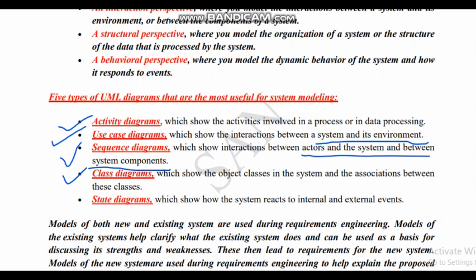Then we have class diagrams. Being a computer student, you should know what is a class. Class diagrams are used to show the object classes in the system and the association between these classes. Whatever components are there in your software are organized in terms of classes, and we try to show the relationship between these classes. Then we have state diagrams, which show how the system reacts to internal and external events — how it reacts to particular inputs and outputs.